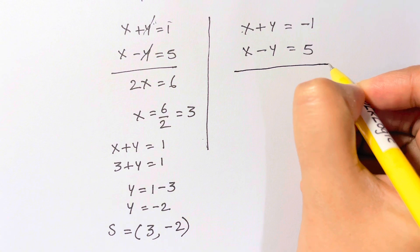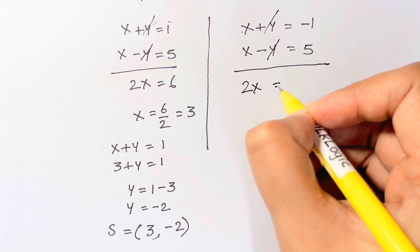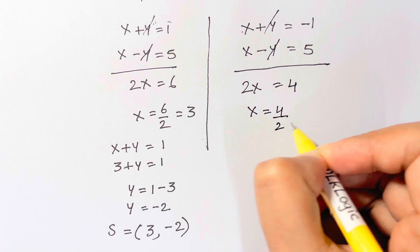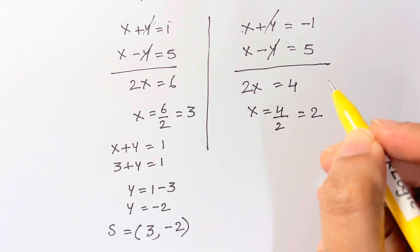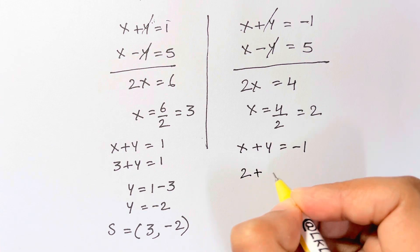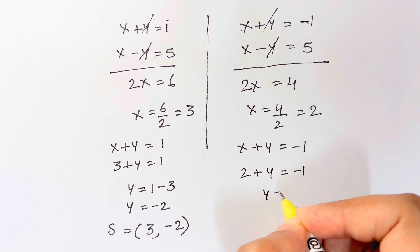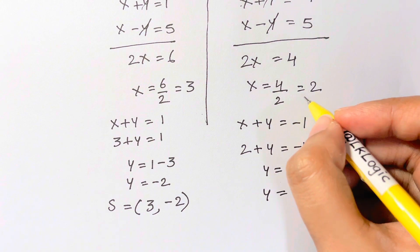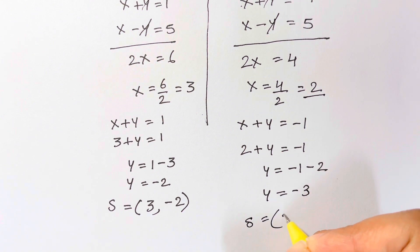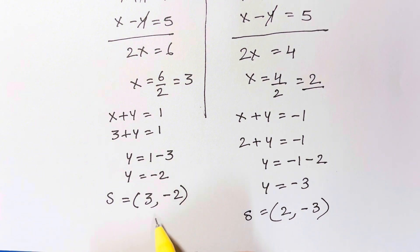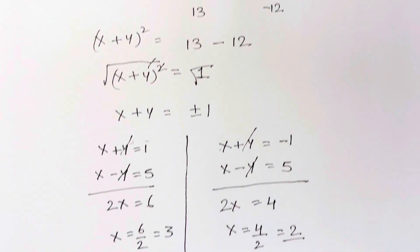Now let's solve for the case x plus y equals negative 1. Add it with x minus y equals 5. Plus y and minus y cancel. 2x is equal to 5 minus 1, that's 4. So x is equal to 4 divided by 2, which is equal to 2. Now substitute into x plus y equals negative 1: 2 plus y equals negative 1, so y equals negative 1 minus 2, which is negative 3. So you've got x coordinate as 2 and y as negative 3. The solution set is 3 comma negative 2, and 2 comma negative 3.